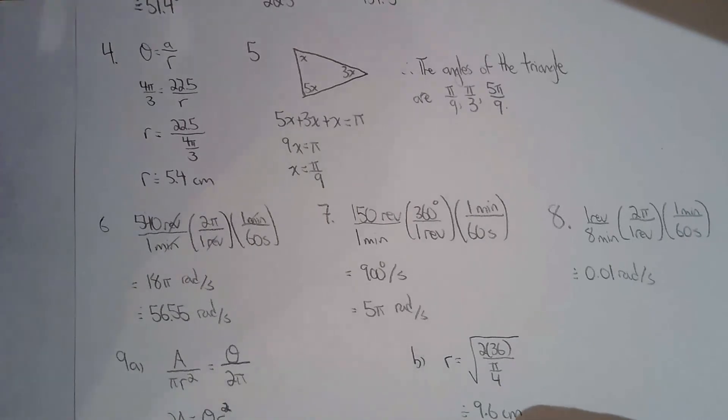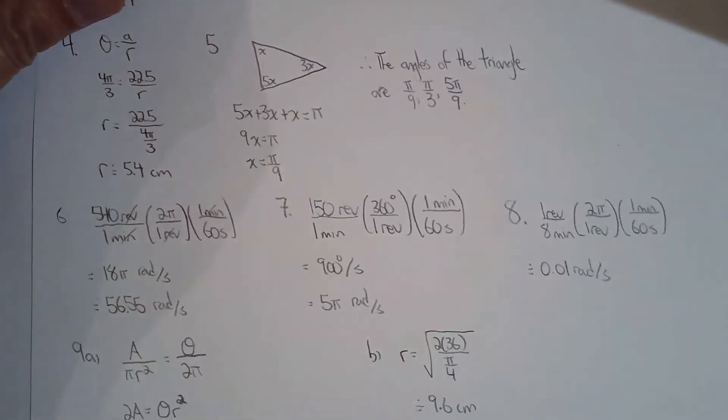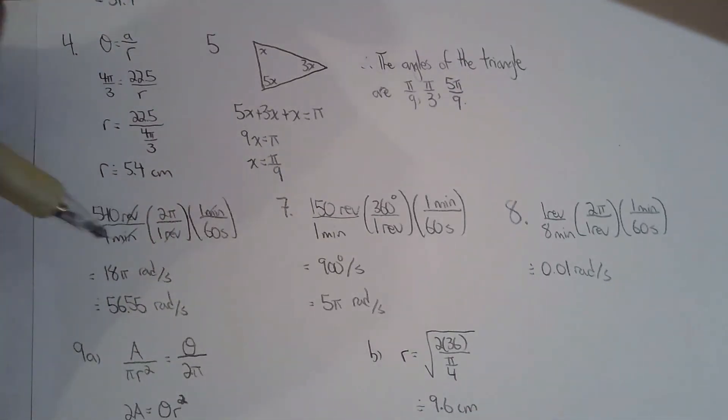Questions 6, 7, and 8 are very similar. You're given some angular velocity in revolutions per minute, and then they make you convert it. In question 6, they want me to convert it to radians per second and approximate that answer. You get 18 pi radians per second as your exact answer, and 56.55 radians per second as your approximate answer.